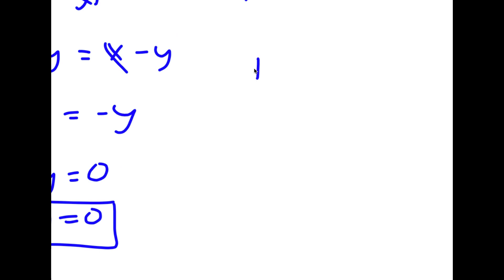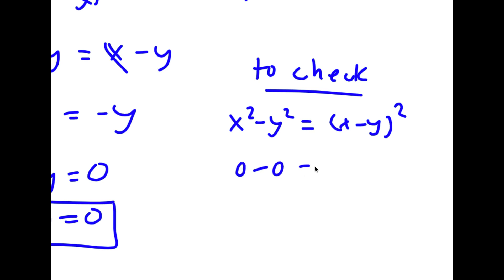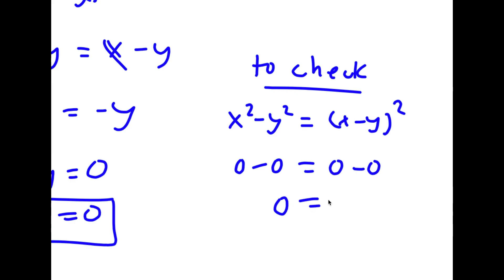Now to check: I have x squared minus y squared is equal to x minus y squared. If both x and y are equal to 0, then I have 0 minus 0 is equal to 0 minus 0 squared, meaning 0 equals 0.